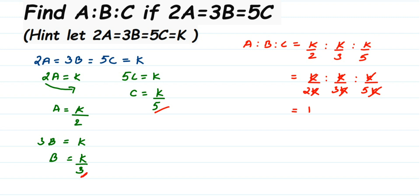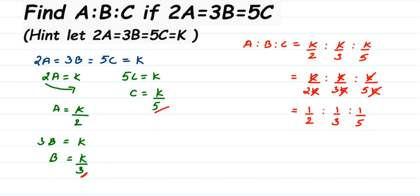After cancelling K, I get 1/2 to 1/3 to 1/5. But I want whole numbers, not fractions. So to do that, we find the LCM of the denominators 2, 3, and 5. I'll find the least common multiple of 2, 3, and 5, and then multiply the whole numerator by that common factor so the denominators are removed and I get whole numbers. Let's find LCM of 2, 3, and 5.